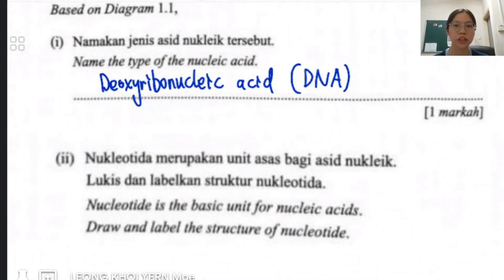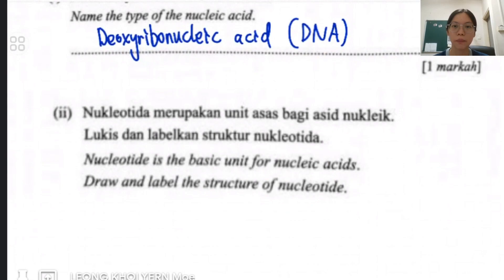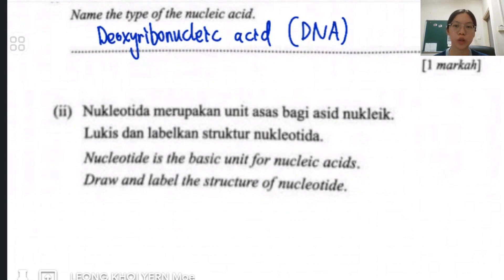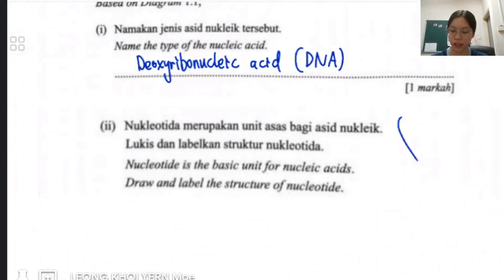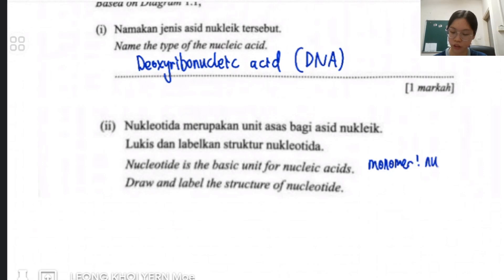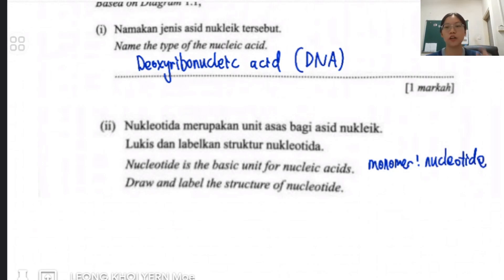The next question is drawing out the structure of a nucleotide — the most basic unit. They don't want you to draw the whole DNA like in the diagram. They want you to draw one basic unit, which is the monomer of the nucleic acid — the nucleotide. A nucleotide consists of three main things: deoxyribose sugar, a nitrogenous base, and a phosphate group.